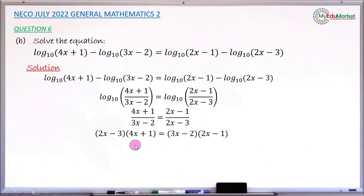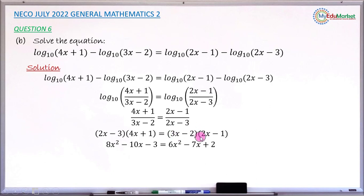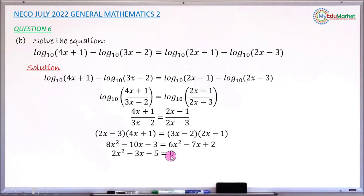Now expand both pairs of brackets and collect like terms. Expanding the left-hand side gives 8x² - 10x - 3. Expanding the right-hand side: 3x times 2x gives 6x², and collecting like terms gives minus 7x, then minus 2 times minus 1 gives positive 2, so 6x² - 7x + 2. Shifting everything to the left and collecting like terms: 8x² - 6x² = 2x², and -10x + 7x = -3x, giving 2x² - 3x - 5 = 0.